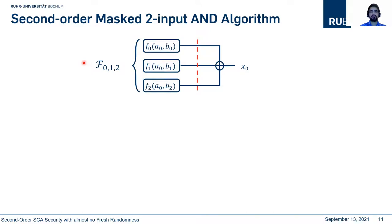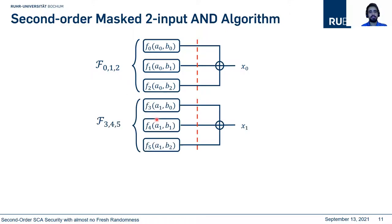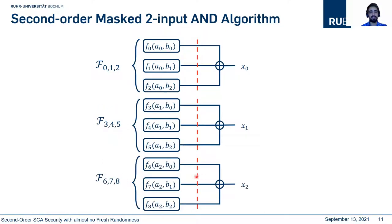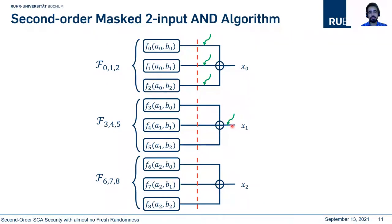But it's not the end — we have to check some more probes. We get the first element from one set, the next from another set, and the last element from the last set. We check whether the construction is second-order secure when one probe is placed on X0, which expands to three probes, and one probe on another element such as F0 or F3. We also have to place another probe on X1, so a set of six probes must be checked for security — verifying that they have identical joint probability distributions.